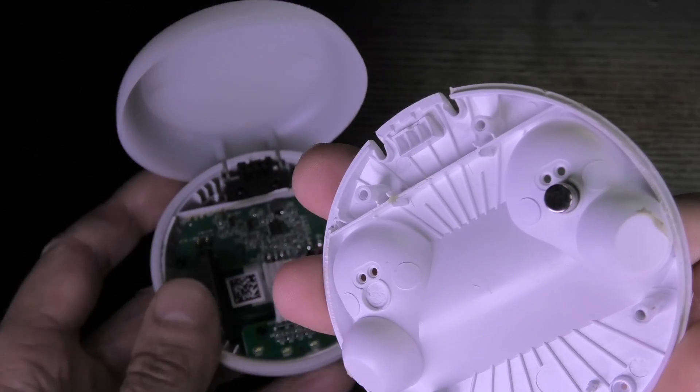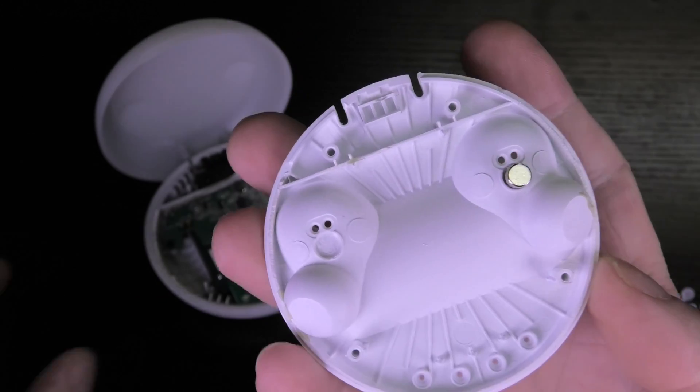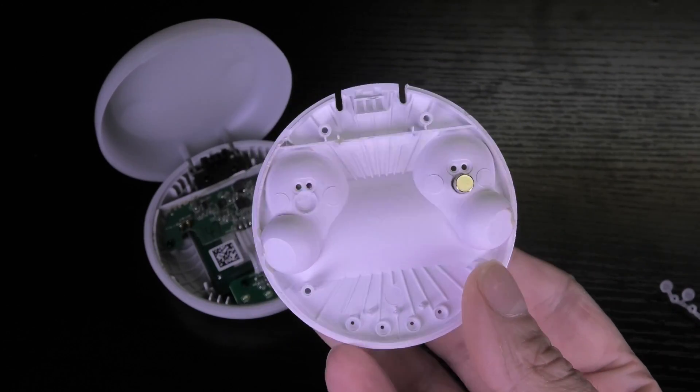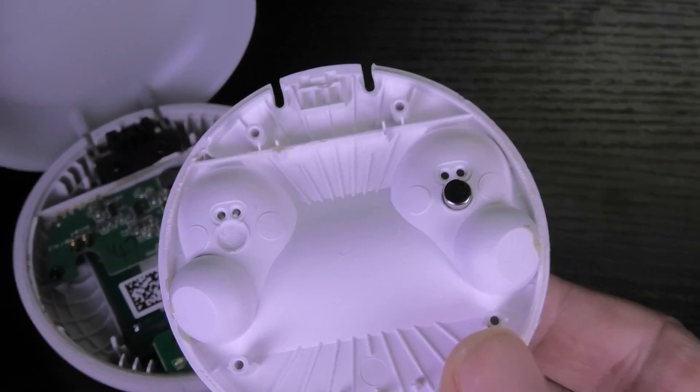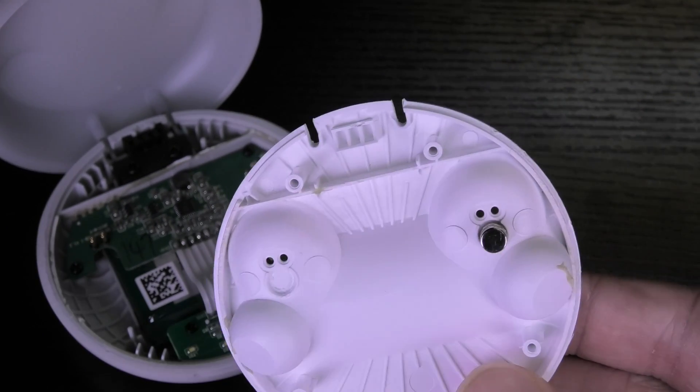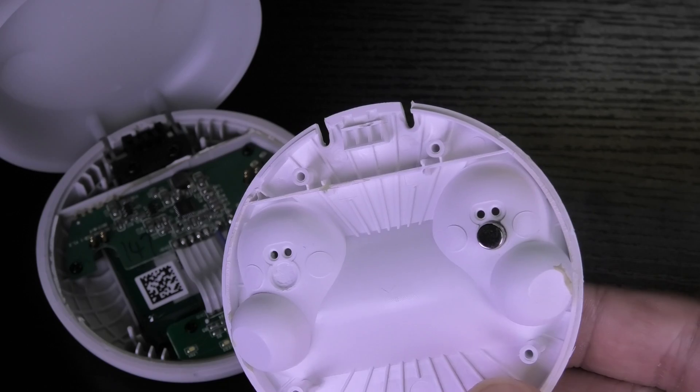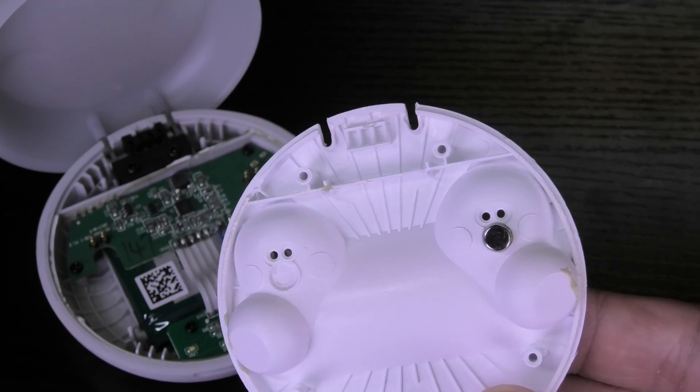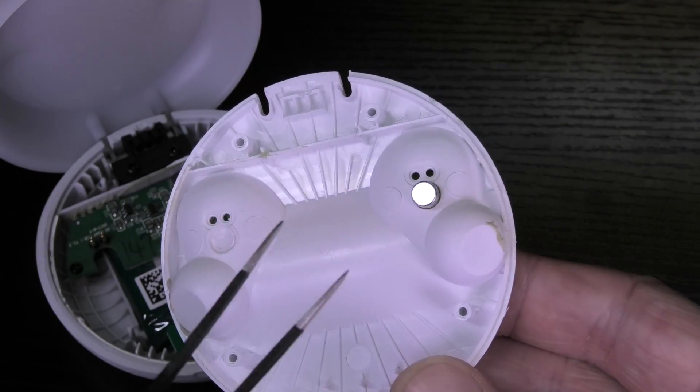And then we can see here the underside of the top and there we can see a couple of things. So first we see a couple of holes here. Those two holes on the left and two holes on the right, that is where the charging pins are poking through. You can see those here.